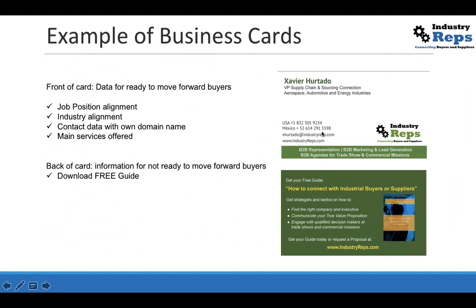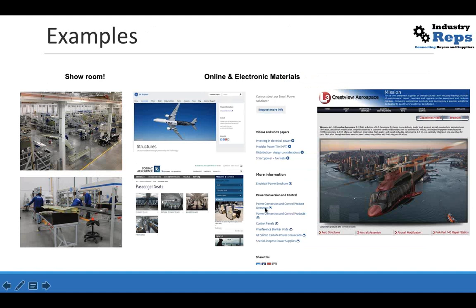On the back of the business card we have a guide. 3% of buyers are usually the ones that are ready for me and my competition. The rest are not ready because they're missing information, so we create guides they can download. That means I can attract those potential buyers to my marketing materials and expose them to my value proposition. The front is for those that are ready; the back is for those that are not ready, but I can capture them in a different way.